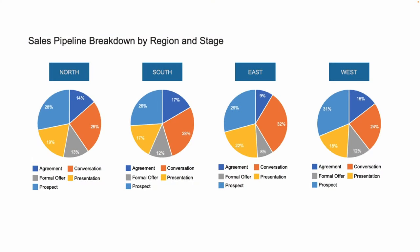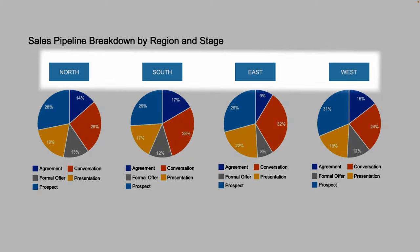Today, we are going to look at an example and take steps to identify what the important element is that needs highlighting, and then look to redesign the visual to deliver this crucial finding. This data is from a small company that is looking to get a sense of its sales pipeline across its four regions: north, south, east, and west.